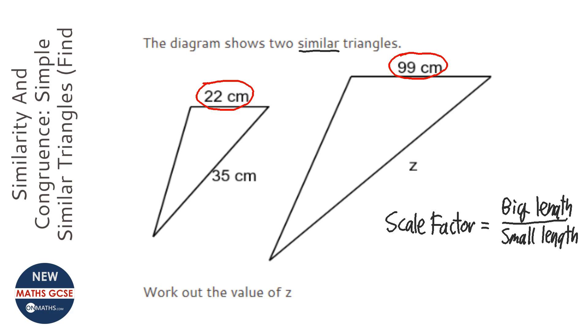So what do I times 22 by to get to 99? The way of doing that is you do the big length which is 99 and divide it by the small length which is 22. Most of you won't need to do this in the calculator, but if you've got a calculator and it's on the calculator paper you can type it in.